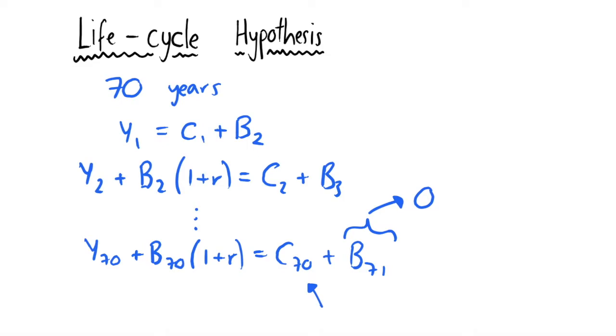So what we want to do with these 70 different budget constraints is combine them so that we have one common intertemporal budget constraint.